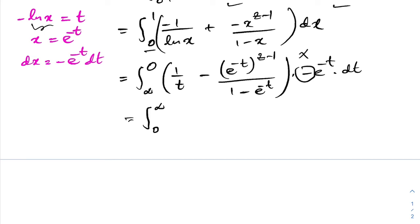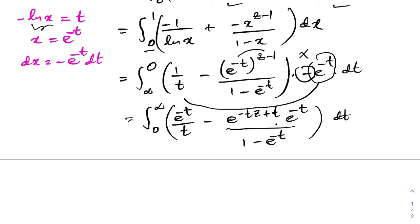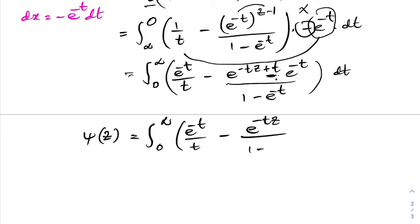After substitution, the integral becomes ∫₀^∞ [e^(-t)/t - e^(-ct)/(1 - e^(-t))] dt. The e^(-t) factors simplify, giving the second integral representation: ψ(c) = ∫₀^∞ [e^(-t)/t - e^(-(c)t)/(1 - e^(-t))] dt. This is the second integral representation of the digamma function.